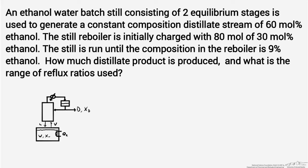In this screencast we're going to operate a batch still using variable reflux to achieve a constant distillate composition. We're given the total number of equilibrium stages in the batch still unit, the composition and amount initially charged, and we're going to run the operation until we get a given concentration in the reboiler at the end. We're asked to determine how much distillate product is produced and the range of reflux ratios used.